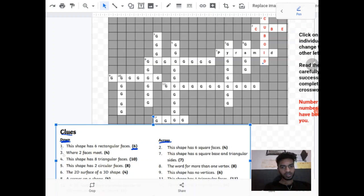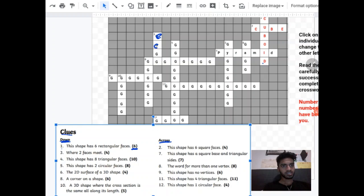Let's do one more. So this one is three down, where two faces meet. So find three where they're going down. That is an edge. So E-D-G-E.